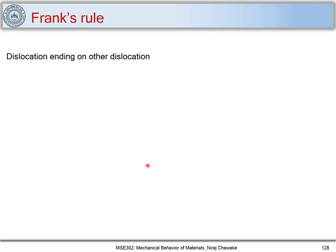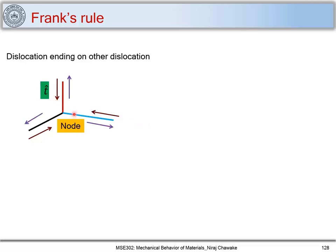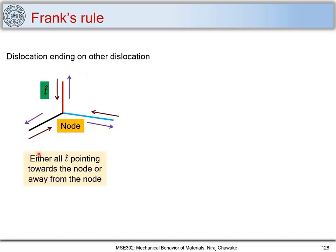Now, the dislocation ending on another dislocation. We can see dislocation lines marked here, and the point at which they intersect is called a node. This is marked by a t-vector. These t-vectors either all direct towards the node or all direct away from the node — either all t pointing towards the node or away from the node. This is an important point.